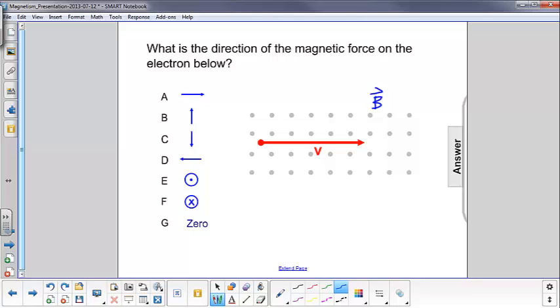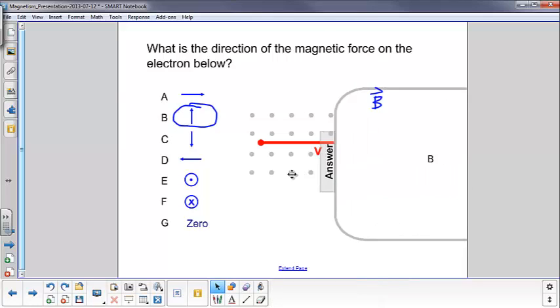So the magnetic force on a proton or a positive charge would be down. But since this is an electron, it will feel a force in the upward direction. So the answer here would be B.